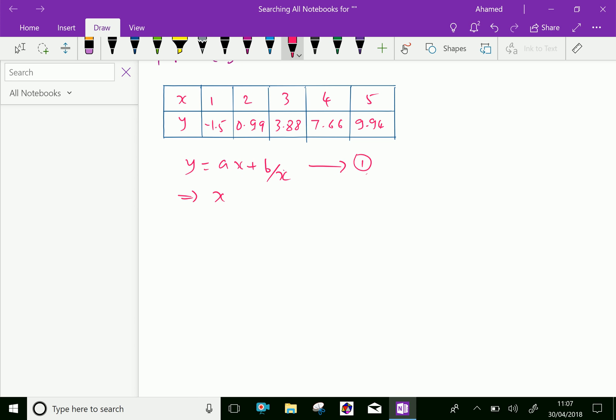By cross-multiplying and simplification, we get xy equals ax² plus b, which is equation 2.